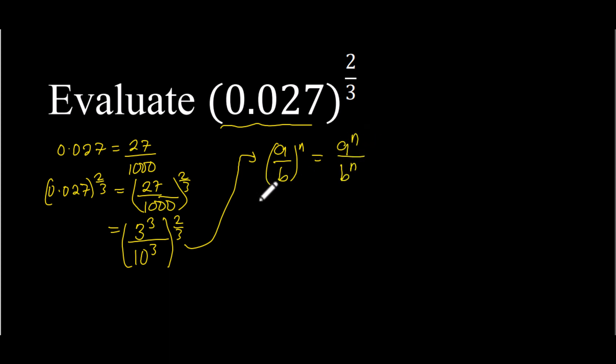And therefore, 3 to the power of 3 divided by 10 to the power of 3, all raised to the power of 2/3, is the same as 3 to the power of 3 times 2/3, divided by 10 to the power of 3 times 2/3. And this is the same as the 3 cancels the 3, and we are left with 3 squared divided by 10 squared.